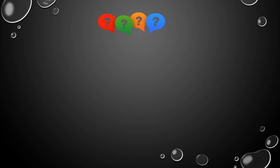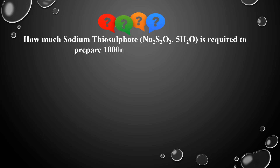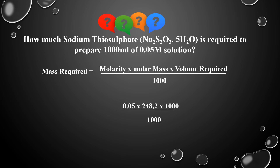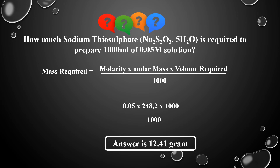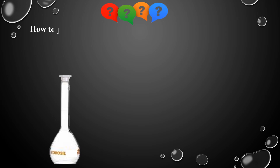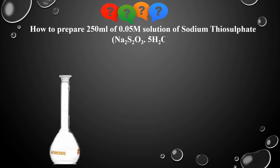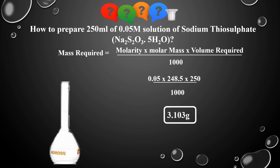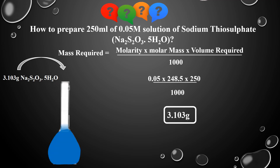Can you prepare these solutions of sodium thiosulfate now? How many grams of sodium thiosulfate should be used to prepare 1000 mL of 0.05 molar solution? The answer is 12.41 grams. To prepare 250 mL of 0.05 molar solution, take 3.103 grams of sodium thiosulfate in a beaker, dissolve in water, and dilute up to 250 mL. This is the 0.05 molar solution in 250 mL.